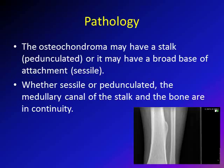Regarding shape, the osteochondroma can be sessile or pedunculated. Sessile means it has a broad base, while pedunculated means it has a stalk. Whether sessile or pedunculated, the hallmark for diagnosis of osteochondroma on x-ray is that the medullary canal of the lesion must be in continuity with the medullary canal of the main bone.